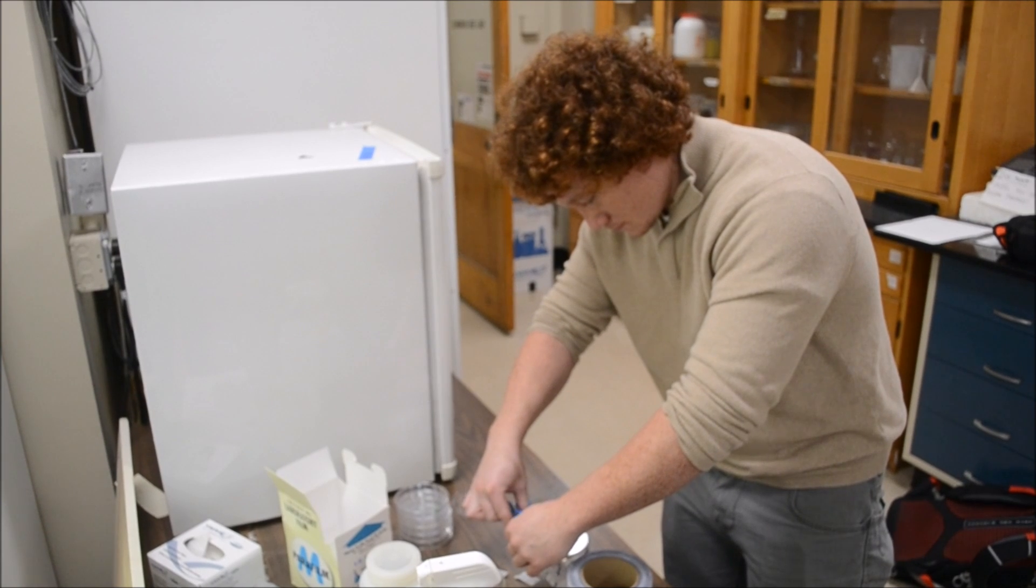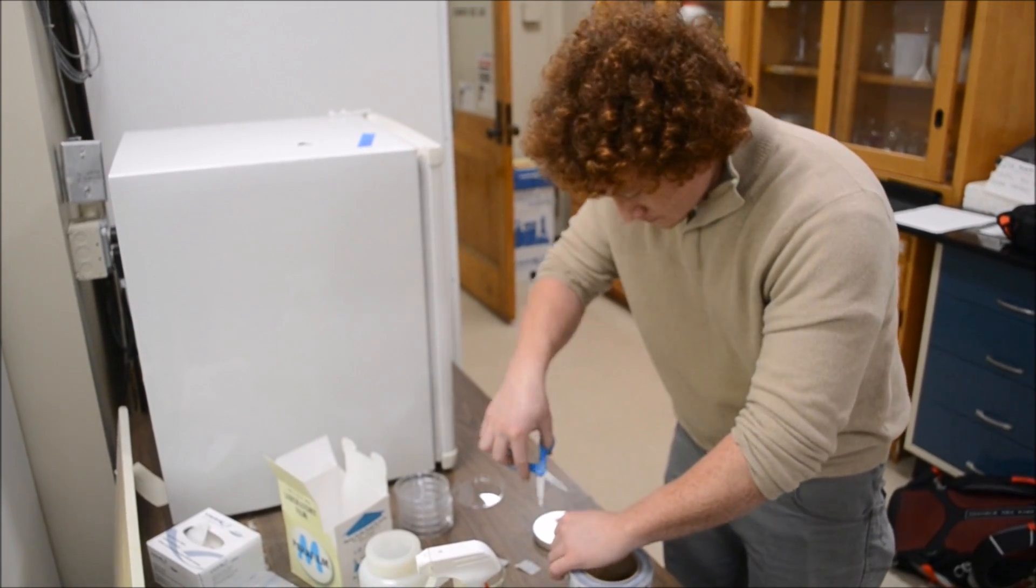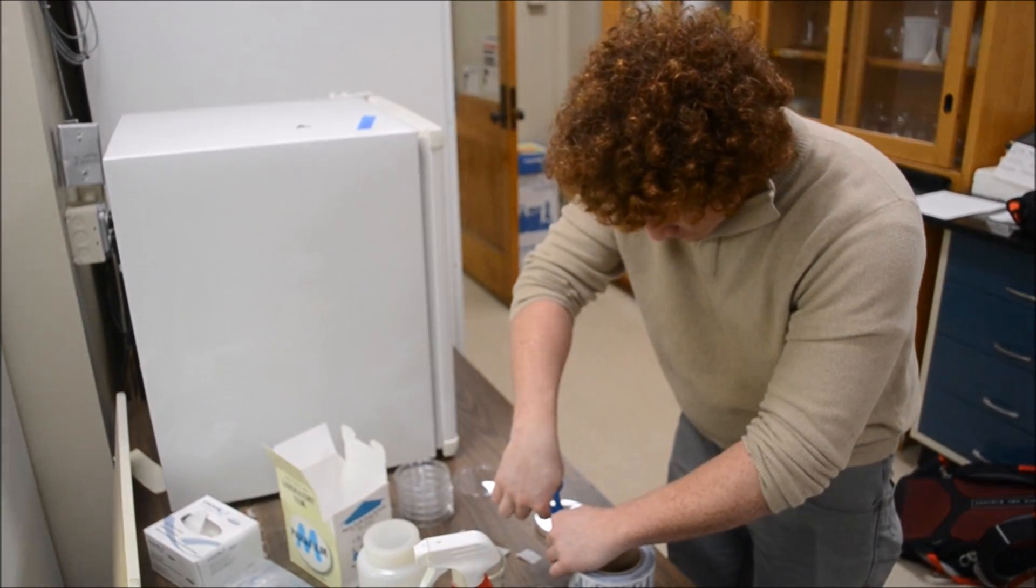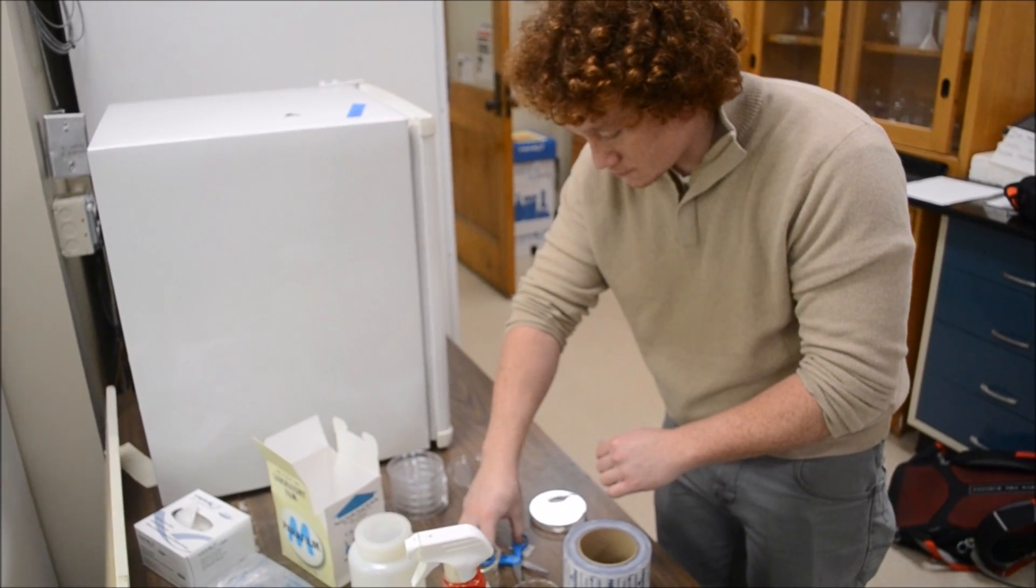Next, wrap the petri plates with parafilm in order to create an airtight seal. This will prevent contamination once placed in the incubator.